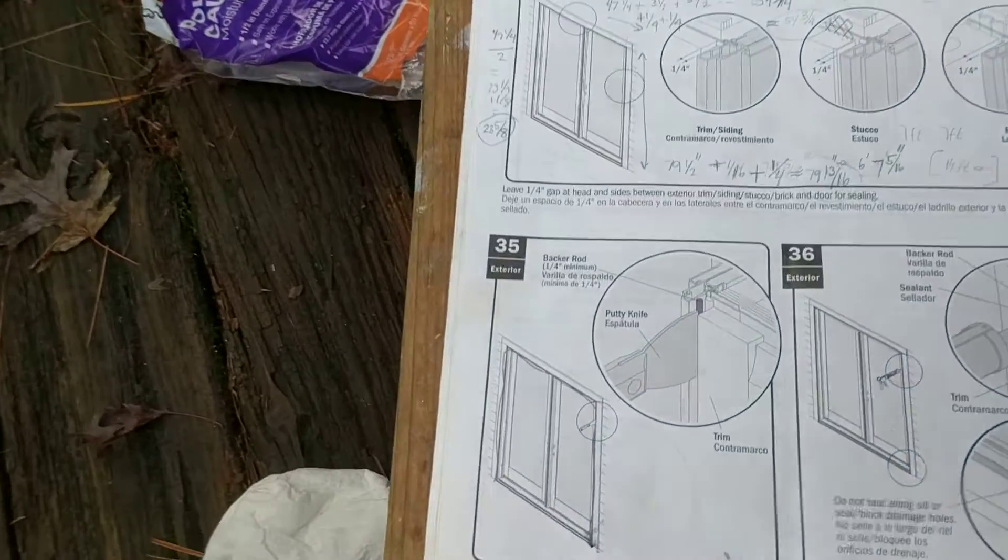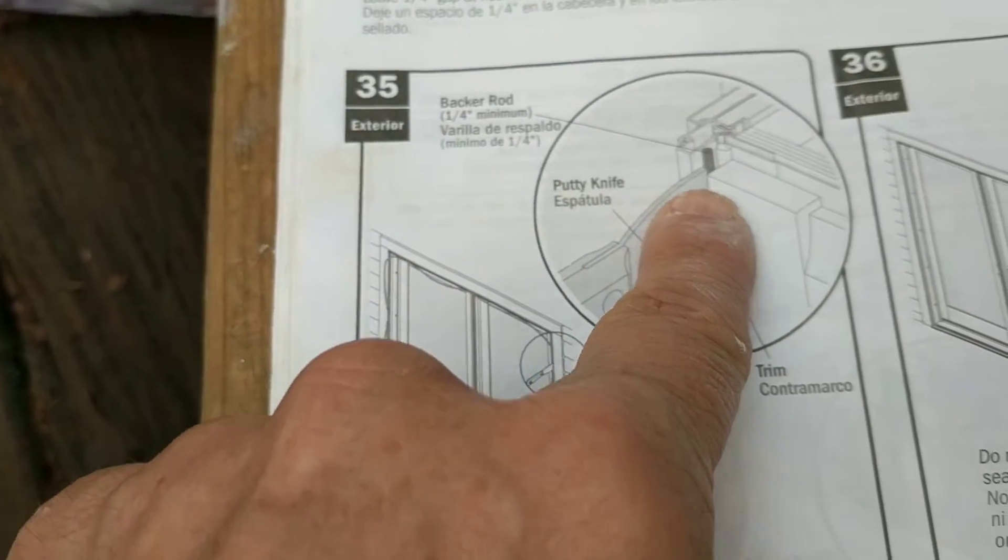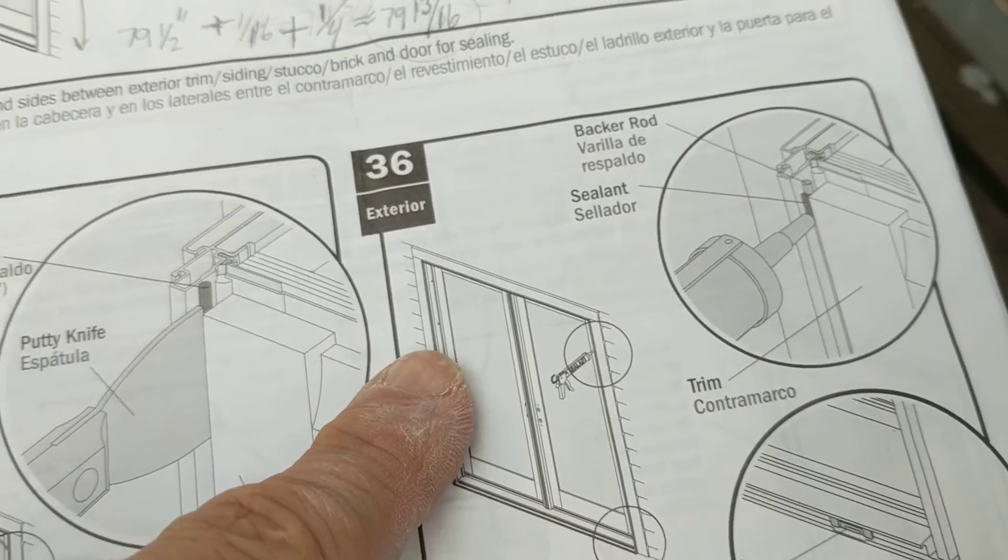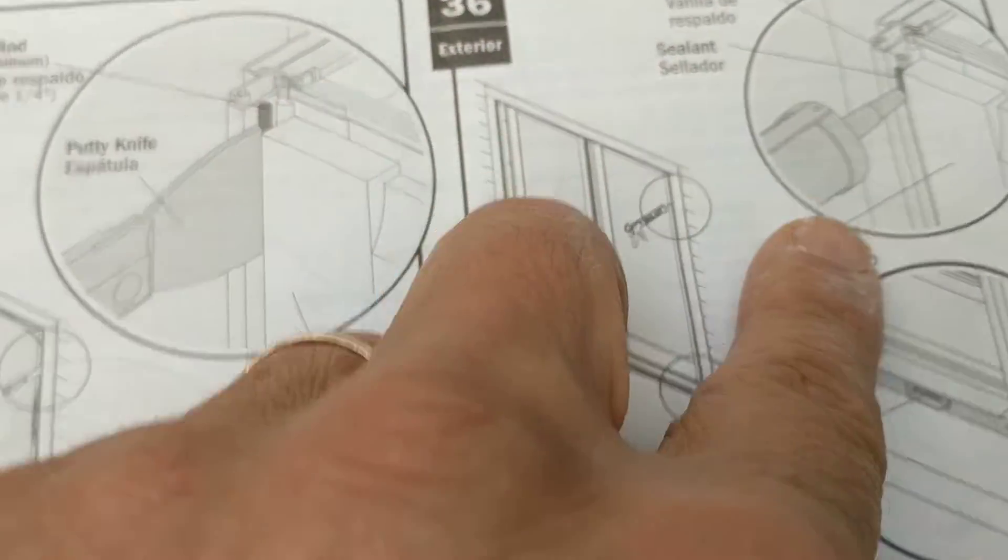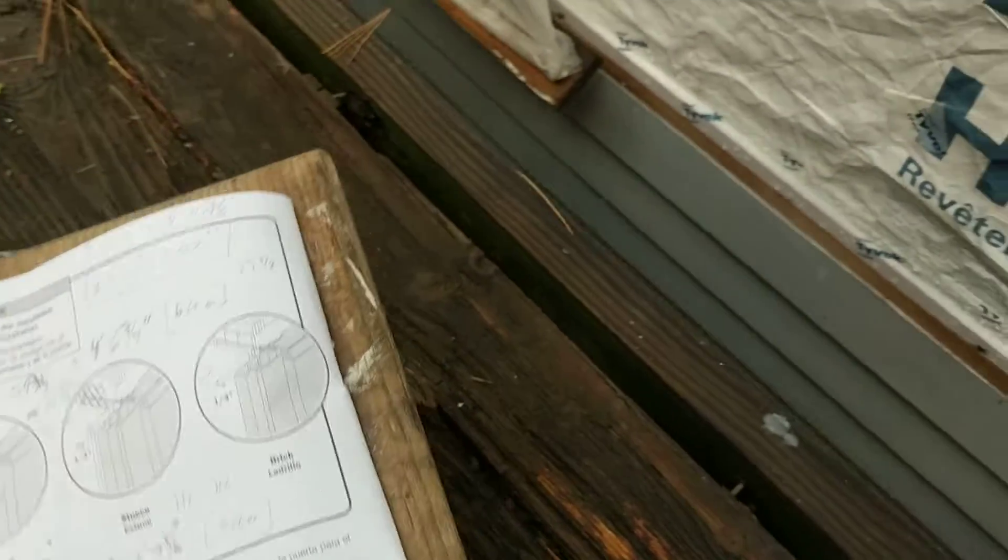So that's step 35: putting in the backer rod with the putty knife. Step 36: adding the sealant on the two sides and on the top. I will say, when I went online I saw on the forums a lot of discussion about this.